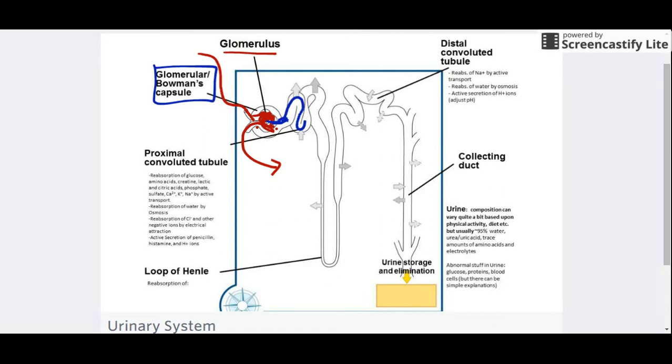The capsule collects all that and sends it into this tube. The tube has a number of different chunks: you got the proximal convoluted tubule, this first twisted portion, then you've got this loop of Henle, the distal convoluted tubule going back and forth, and then the last little bit here is the collecting duct before it officially becomes urine.